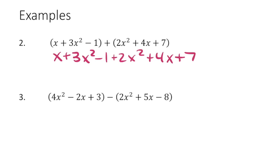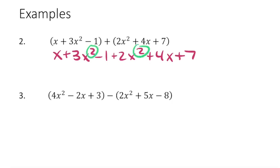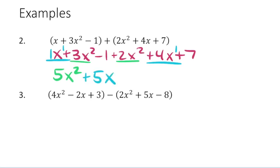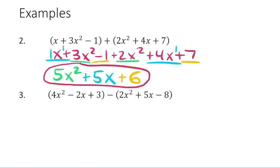The next skill is just combining like terms. We want our answer in standard form, so we deal with the highest degree first — in this case, the second degree. I have a 3x squared and a 2x squared, which combine to give 5x squared. Next I look for first-degree x terms and combine 1x and 4x to make 5x. I'm leaving things underlined so I can see which terms I've addressed. The two remaining constant terms, negative 1 and 7, add together to give 6. My answer is already in standard form.